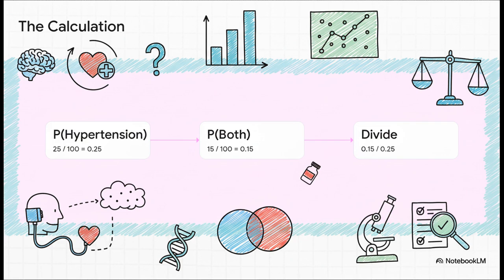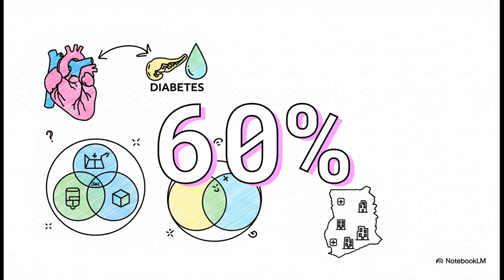Let's just walk through the numbers together. It's easy. Step one, what's the probability of any random patient having hypertension? Well, it's 25 out of 100, which is 0.25. Step two, what's the probability of having both? That's 15 out of 100, so 0.15. Okay, for the final step, we just divide that both number by the hypertension number. And boom, there it is, 60%. This is our proof.